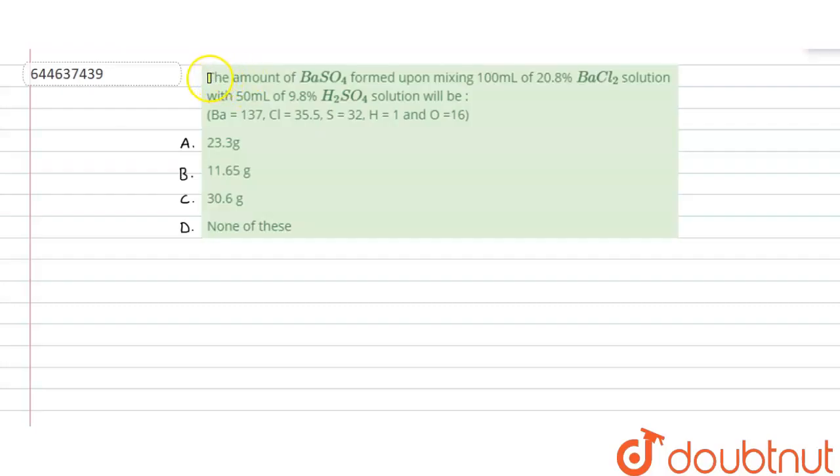Hello, here the given question is: the amount of barium sulfate formed upon mixing 100 ml of 20.8% barium chloride solution with 50 ml 9.8% H2SO4 solution will be.